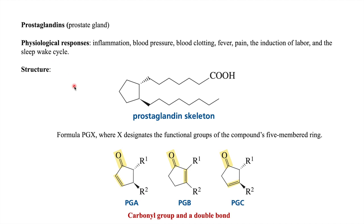Regarding the structure of prostaglandin, you will see there is a pentacyclic ring and there is a chain which contains a carboxylic group at the terminal position. This chain is a 7-carbon chain.